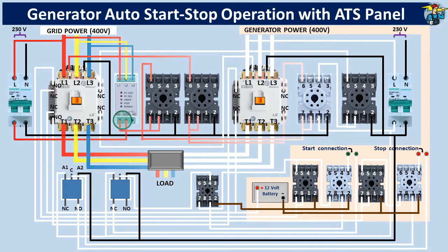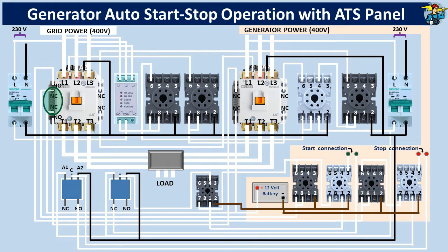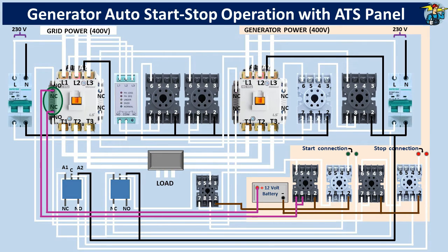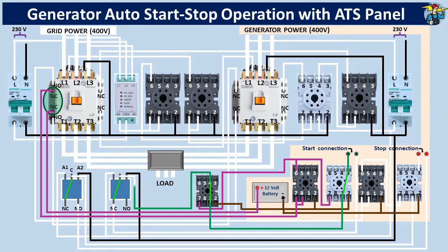When the main power supply fails, the normally open auxiliary contact points on the mains contactor will close. This allows power from the 12V battery to pass through to the generator start timer. A delay period of 2 to 3 seconds is set on this timer to stop unnecessary generator starting during momentary power cuts. After this delay period, the start relay and the start fail detection timer are energized. Terminals 1 and 3, normally open on the start relay, are now closed, but points 1 and 4 normally closed on the start fail timer still remain closed until the set delay time is reached. The common terminals of the 5-pin SPDT relays are connected to their normally closed terminals since they are not yet powered. The generator start push button points are now connected through the loop created through these 3 relays.